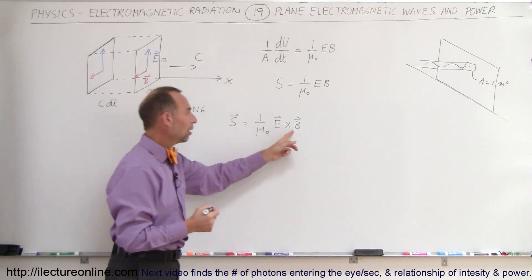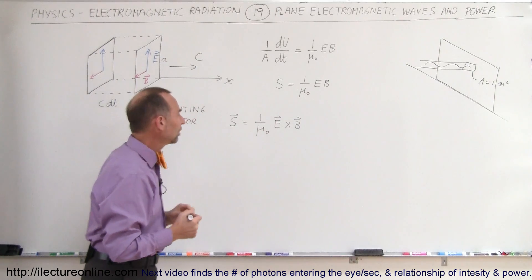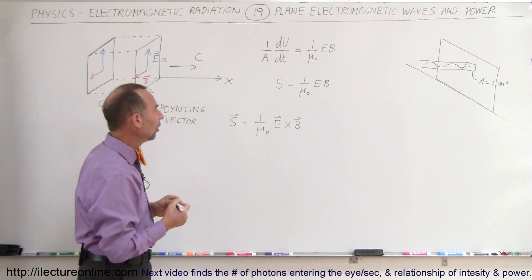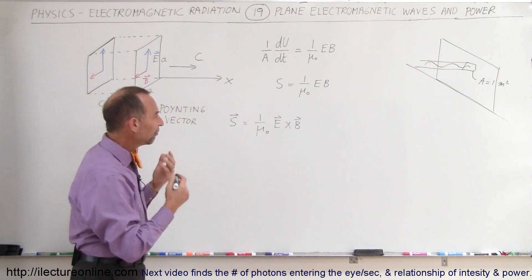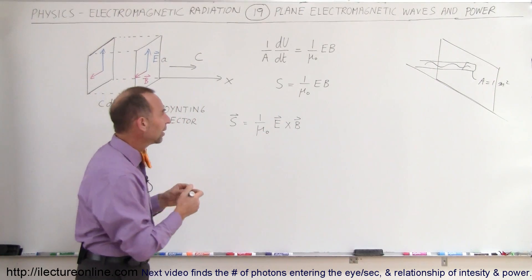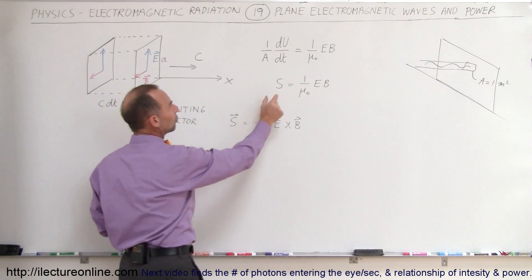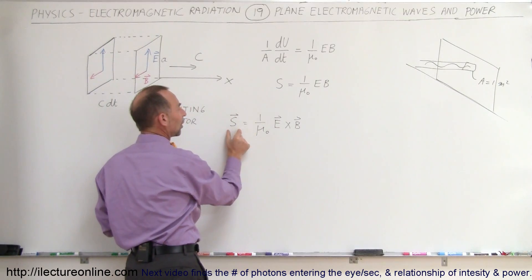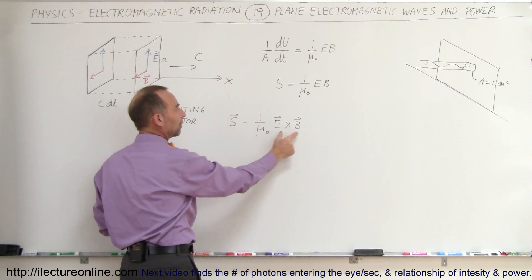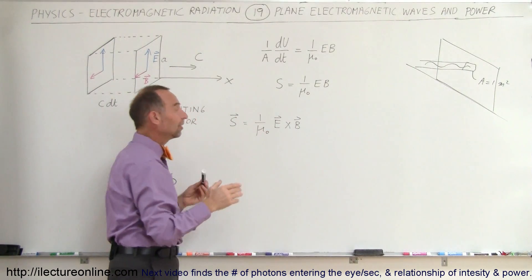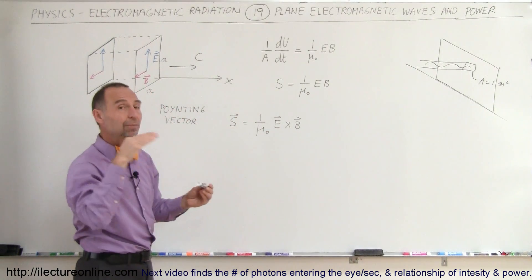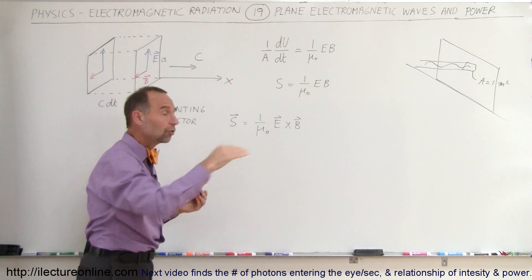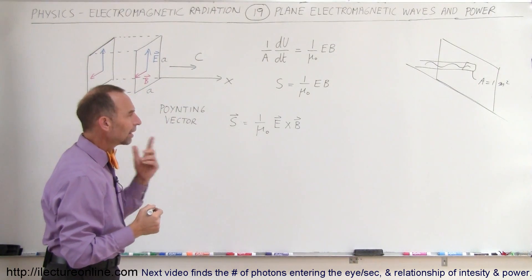These are indeed the RMS values. To get a feel for it, the magnitude is equal to 1 over mu sub naught times E times B. If you want to write it in vector format, you get S as a vector, and E cross B points in the direction of the motion of the wave.